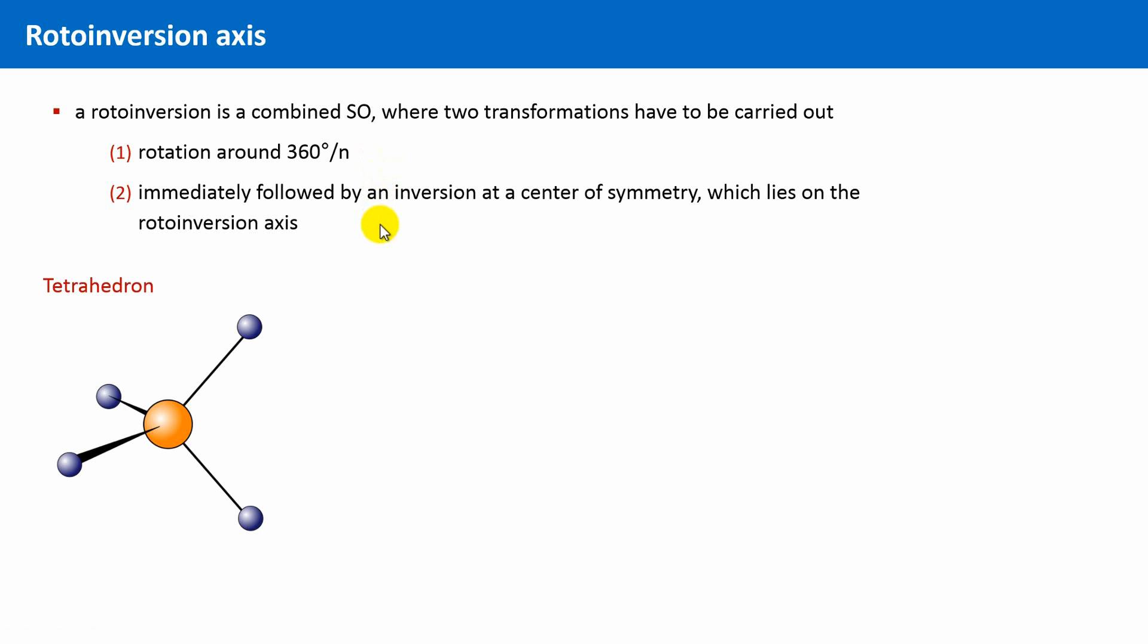Let's look at the tetrahedron. Here, we have a four-fold rotoinversion axis. This means, in order to obtain an indistinguishable configuration, we first have to rotate this tetrahedron by 90 degrees, and then we carry out an inversion at the center.